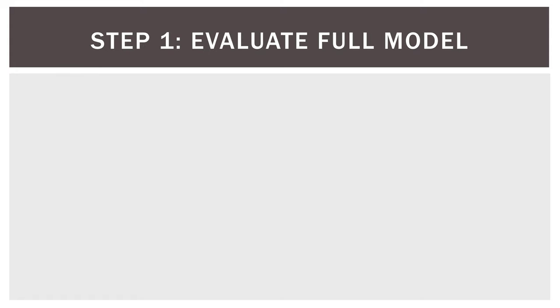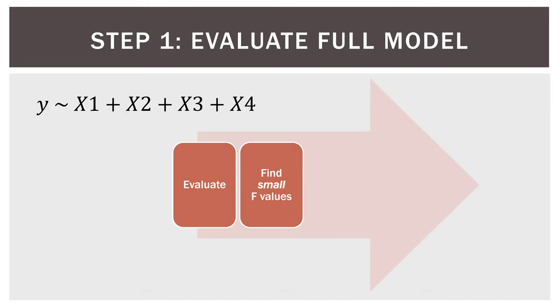So step one, evaluate the full model. We dump all of our variables in right at the start. And we're using the same house price data that I used in the previous video. It's data I scraped off the web for the area kind of around where I live. And I changed it up a little bit to use in these teaching modules. So we dump all four variables in right from the start. So we evaluate each variable. We find the small f values, which will be aligned with small sum of squares for that variable. So we find the small values, not the large ones, like we did in forward selection.